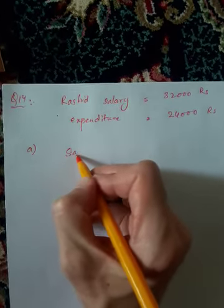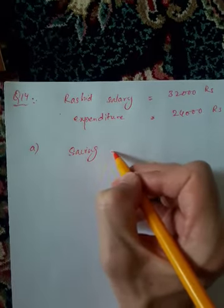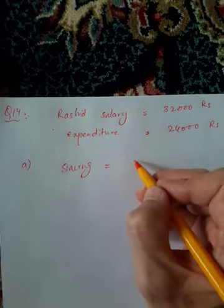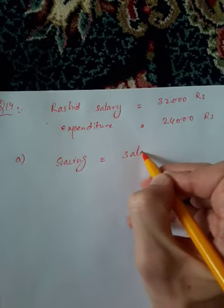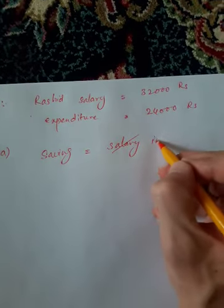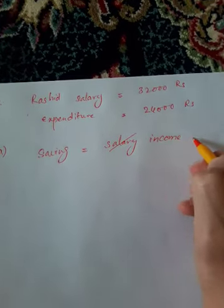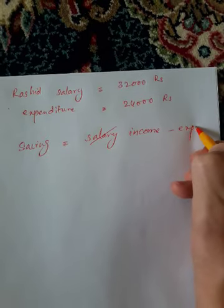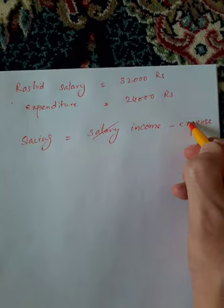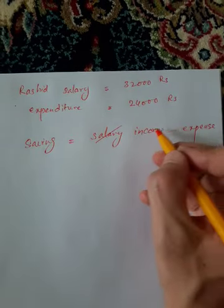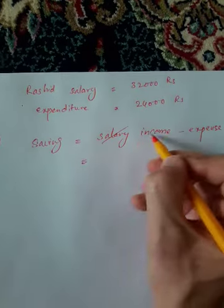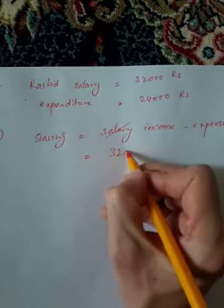Income minus expense gives the remaining saving. Here, income is salary, which is 32,000. Expense is 24,000.